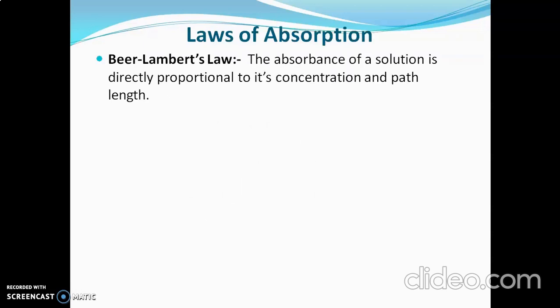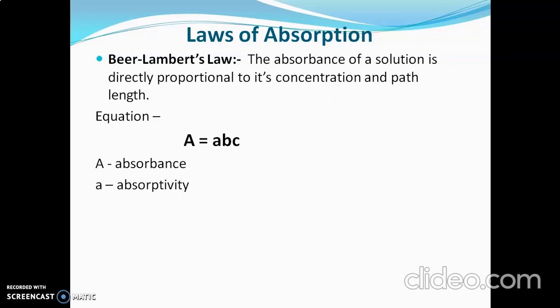The combined Beer-Lambert law states that absorption of a sample solution is directly proportional to both its concentration and path length. The equation is A = abc, where A is absorbance, a is absorptivity — an intrinsic term that depends on the structure of the molecule (if the structure has chromophores like double bonds or unsaturation, absorptivity is more) — b is path length, and c is concentration.